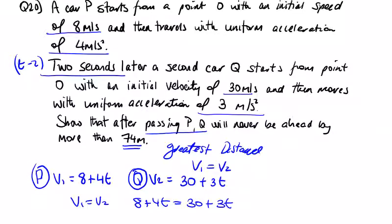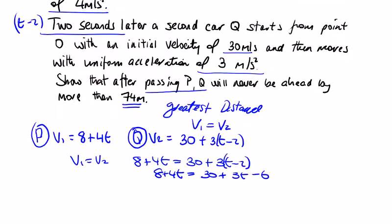That's not T, it's T minus 2, so just be careful. So 8 plus 4T is equal to 30 plus 3T minus 6. So T is equal to, well, 3T across, that's just going to give me T, then we have 24 minus 8, 16 seconds.